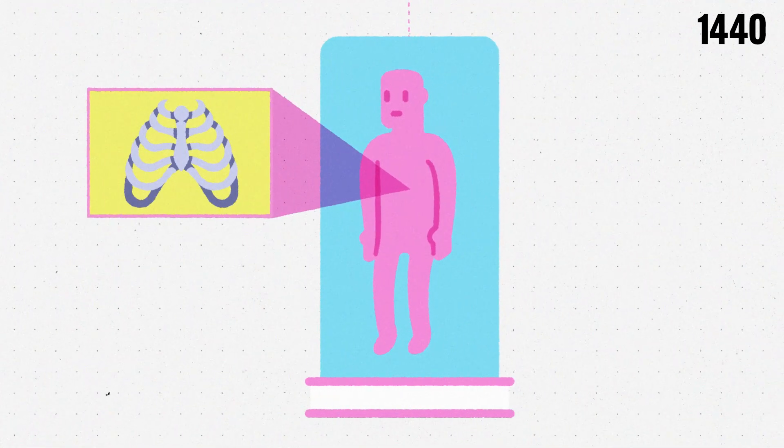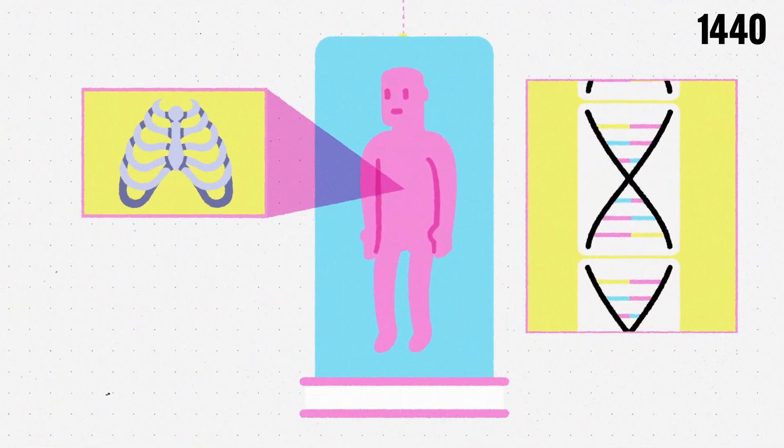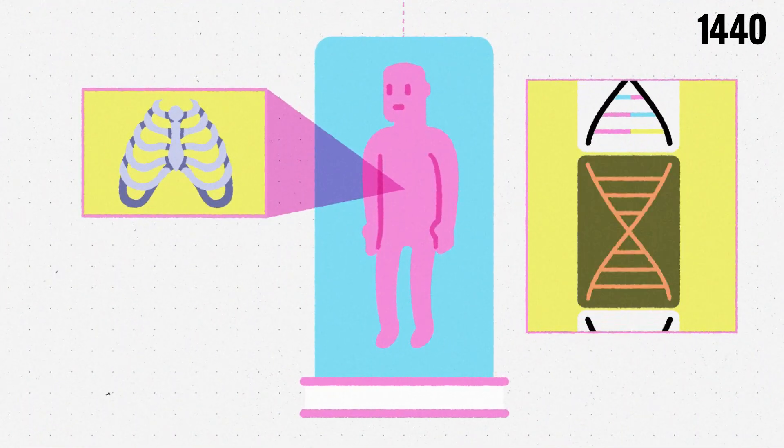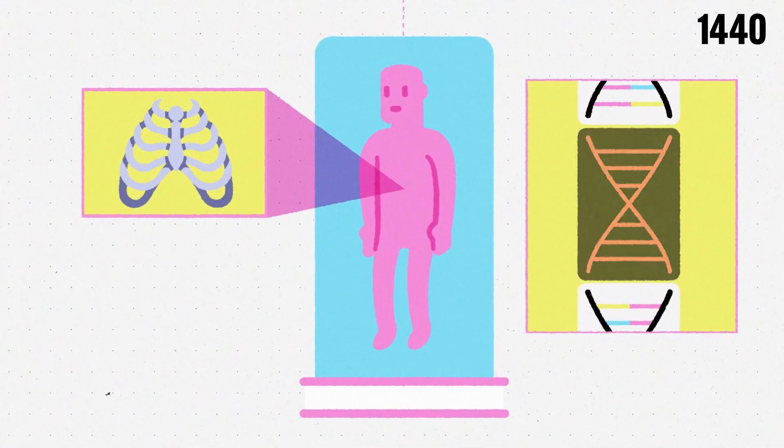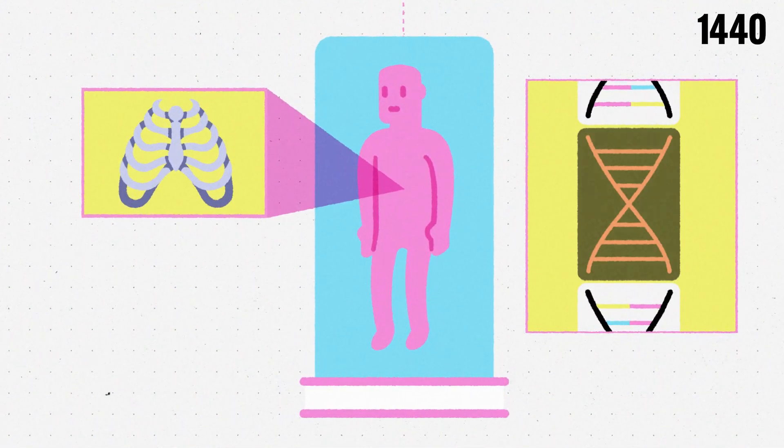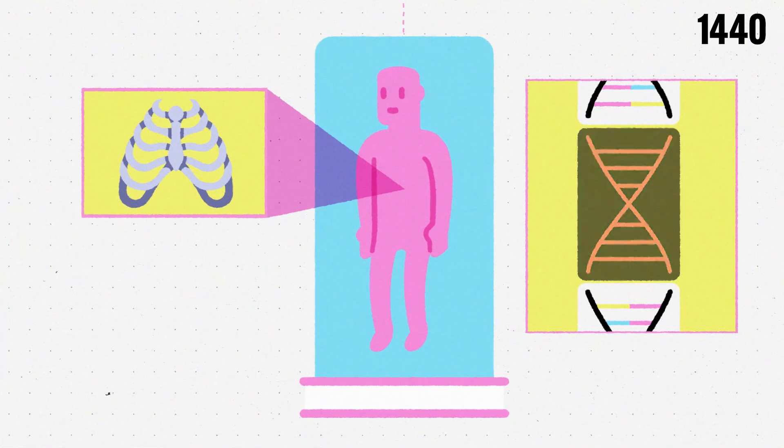This genetic information is stored in DNA. Sometimes the DNA sequence in a gene can have mistakes, leading to problems like higher cancer risk or conditions like cystic fibrosis.